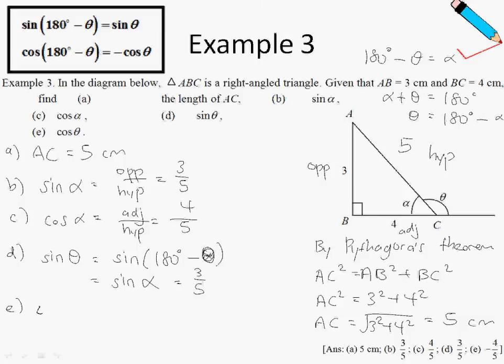For cosine theta: using the second formula and multiplying both sides by negative 1, cosine theta equals negative cosine of (180 degrees minus theta). Since 180 degrees minus theta equals alpha, this becomes negative cosine alpha. Cosine alpha is 4 fifths, so cosine theta equals negative 4 fifths.